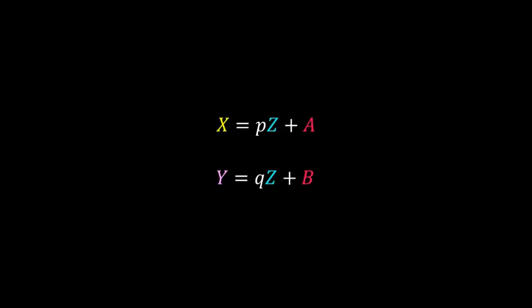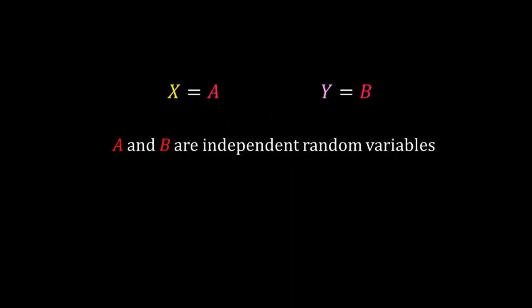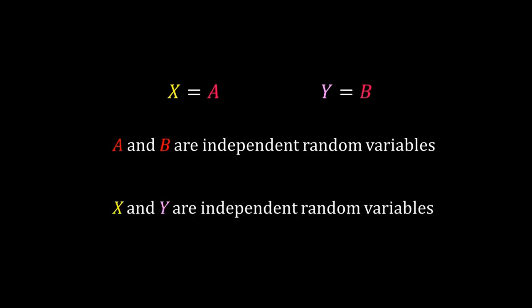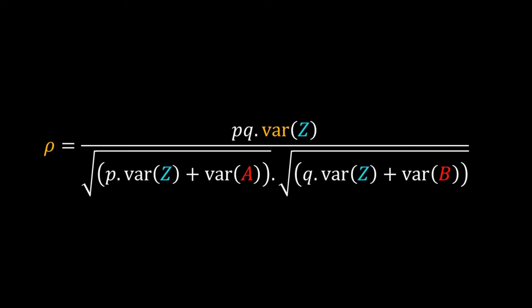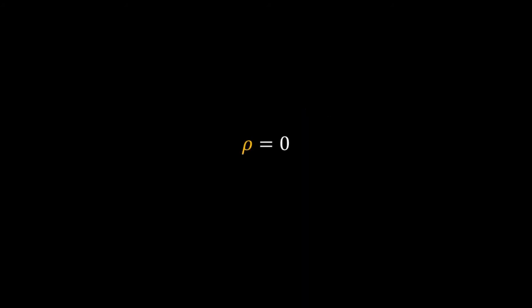Now consider another extreme case where z equals zero, so x = a and y = b. Since a and b are independent, x and y are also independent — meaning there is no association between them. Because variance of z is zero, the numerator p·q·variance(z) is zero, and therefore rho equals zero.